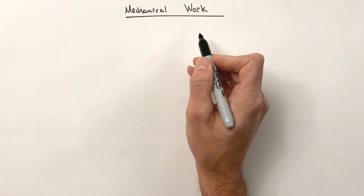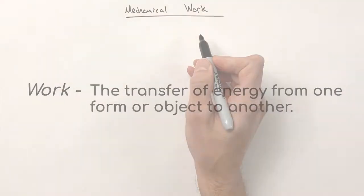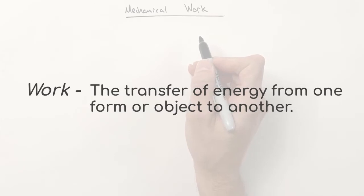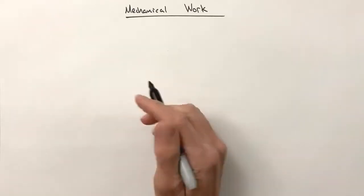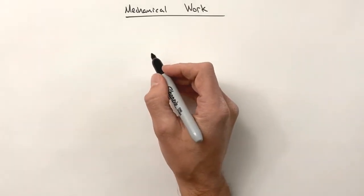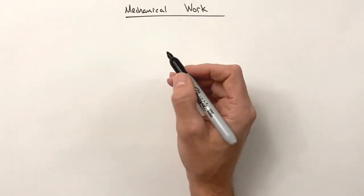In science, work is defined as the transfer of energy from one form or object to another. So anytime an object heats up, a chemical reaction occurs, or even just giving a block a push, energy is transferred. So work is done.